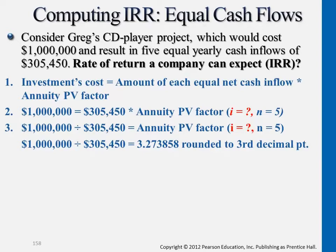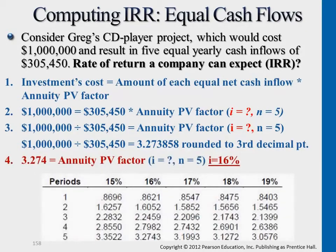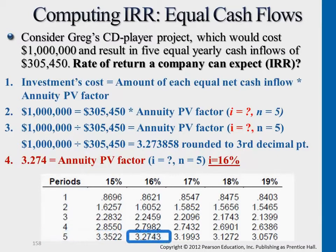So this part here, you'll be going through the fifth year, and then you rearrange this equation to find the closest factor, which is closest to 3.274. If you trace that to the table, you'll find the IRR for this project is about 16%.